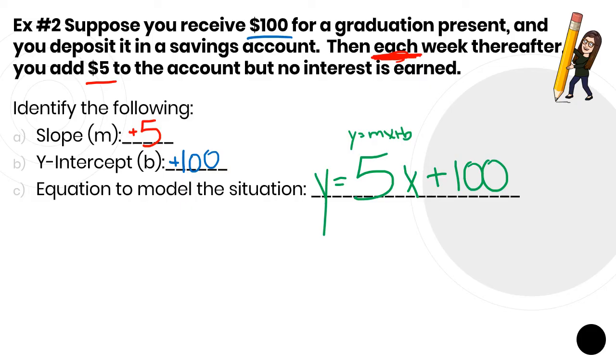So why do we even need these equations? Well, because I could take it a step further and I could ask you, how much money is he going to have in 50 weeks? You could plug in 50 into the equation and calculate it very quickly. This is a good method if you want to save up to a certain amount and you want to see how long it'll take you. You can use a linear equation.